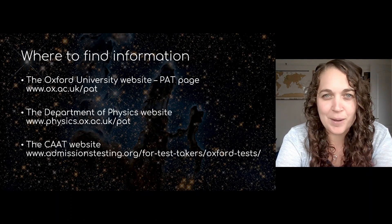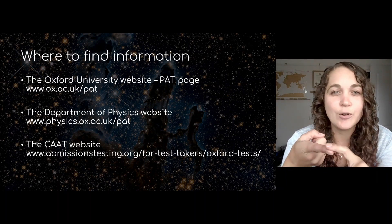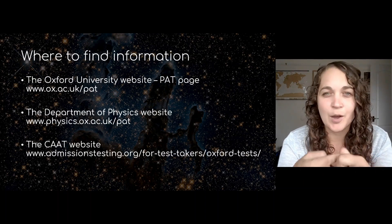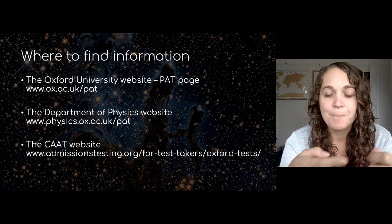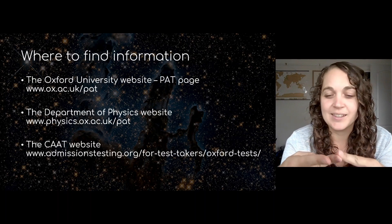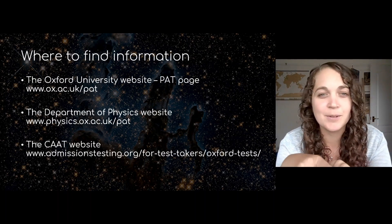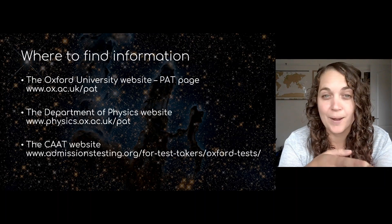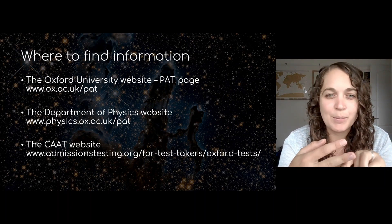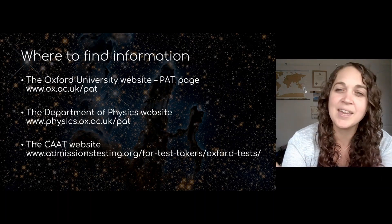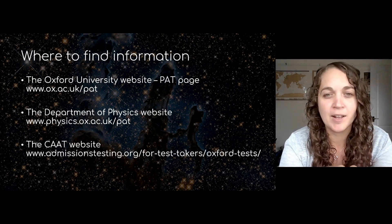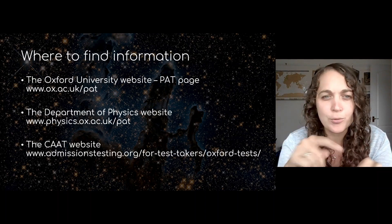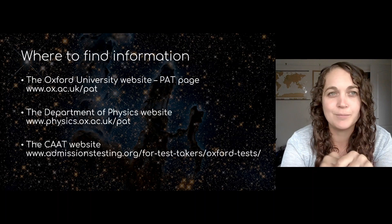The best places to get information about the PAT are these three sites. First, the Oxford University website — there's a dedicated page at ox.ac.uk/PAT with loads of information and resources. Secondly, the Department of Physics website at physics.ox.ac.uk/PAT, which has loads of information. Thirdly, the CAAT website — CAAT is the company that administers the test, and their website has tons of information, particularly about dates, deadlines, and things like that. I'll put all three links in the video description below.